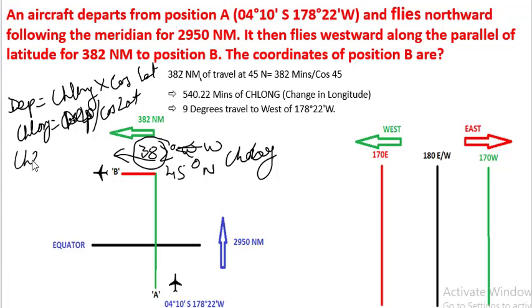So change in longitude here equals 382 divided by cosine 45, which gives us 540 minutes of change in longitude. This 540 divided by 60 will give us 9 degrees of change in longitude.